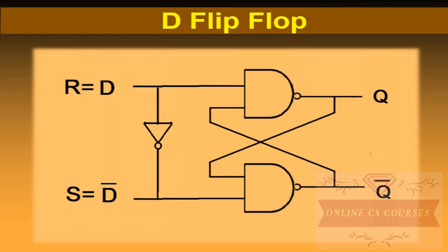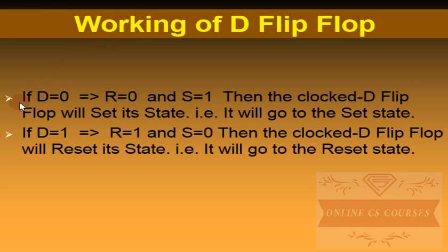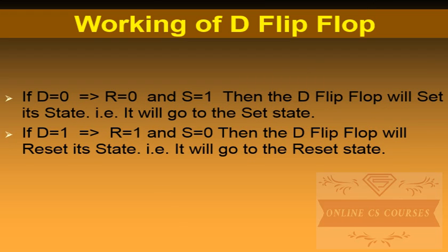Now let's see the working of the D flip flop. If D is equal to 0, that means R is equal to 0, because D represents R (the reset state). If R is equal to 0, then S will be 1 because S represents the D complemented value. So the D flip flop will go to the set state.